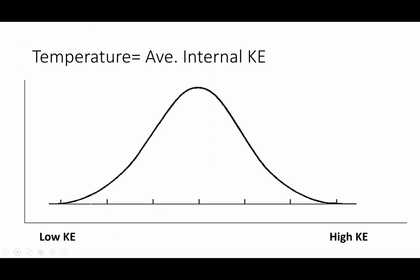Let's talk about this average internal kinetic energy. As you know from math class, if you take a bell curve — this is a picture of a bell curve — if you've got a random distribution of anything, you're going to have a center, and the center is going to represent the average. The average for the speed or kinetic energy of the molecules of something is what that temperature is going to be.